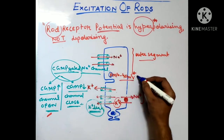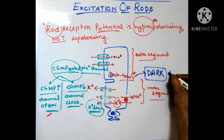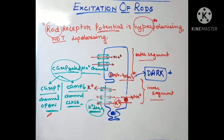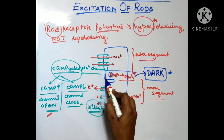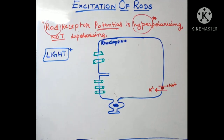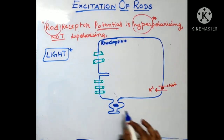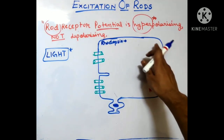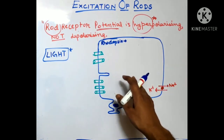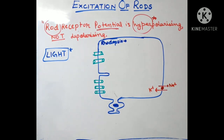This resting state of minus 40 millivolts refers to the situation in the dark — when light is not falling on the retina. Now let's see what happens when light falls on the rods. The diagram shows the rod in a bigger size just to explain things clearly; this doesn't mean the rod increases in size when light falls on it.